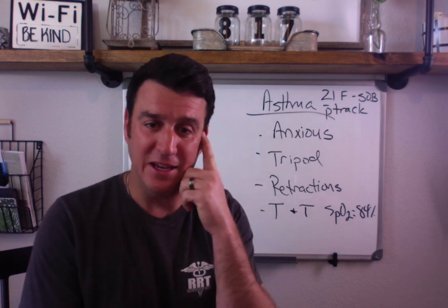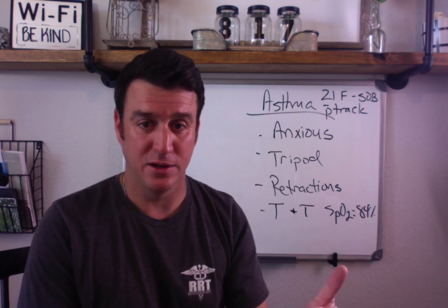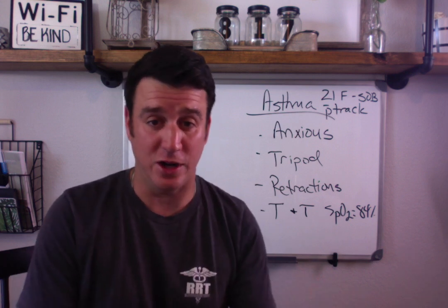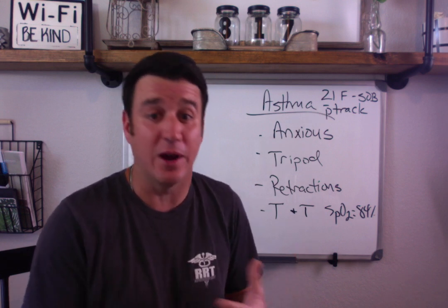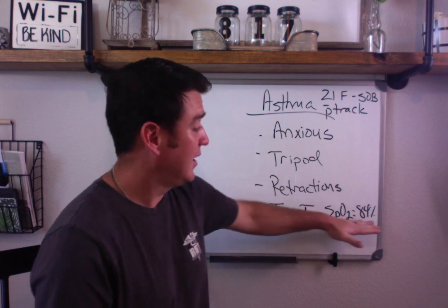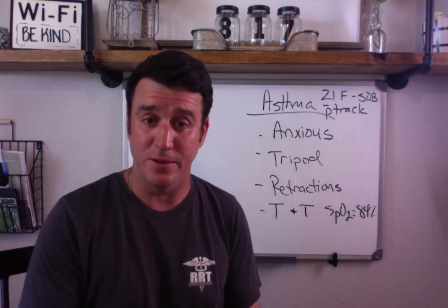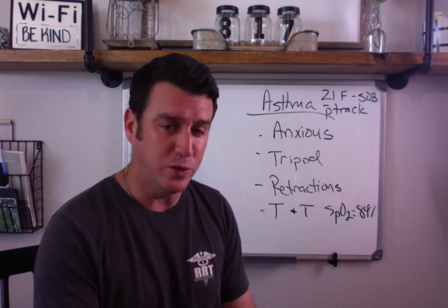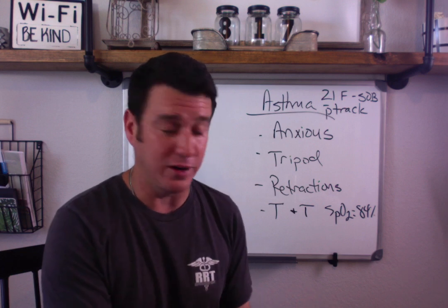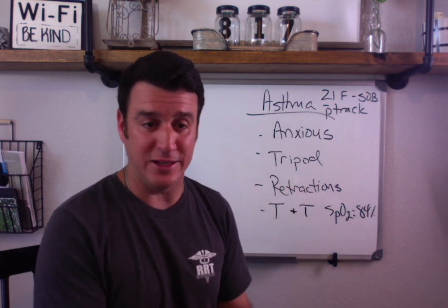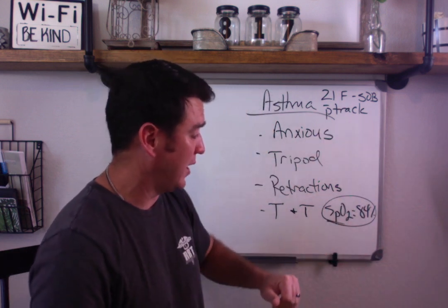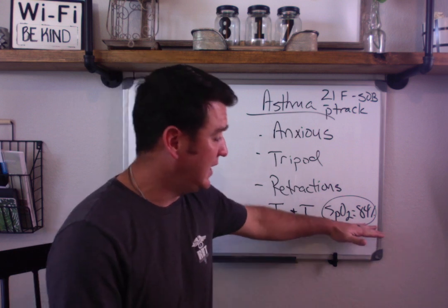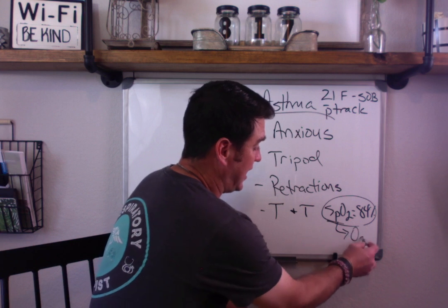Right now you need to be thinking: I have an asthma patient who's panicking because she can't breathe. She's tachypneic, tachycardic, and hypoxemic. We need to do two things right off the bat. Obviously the first thing is to fix this saturation — we understand that a lot of her shortness of breath is due to hypoxemia. So we need to put this person on some oxygen to address her acute hypoxemia.